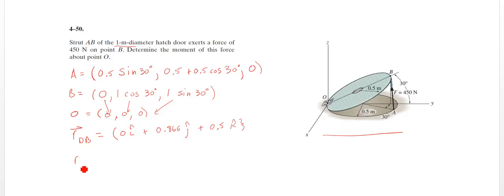Now, a position vector from A to B. That's the direction of our force. Alright, so we're starting at A going to B. So in the X direction, we have 0 minus, what do we have? Point A. We have 0.5 times sine 30. You may recall sine 30 is 0.5. So we have 0.25 there.